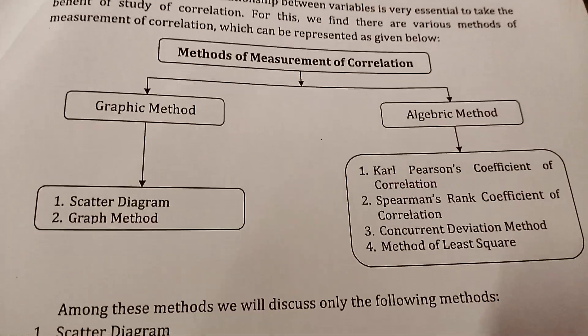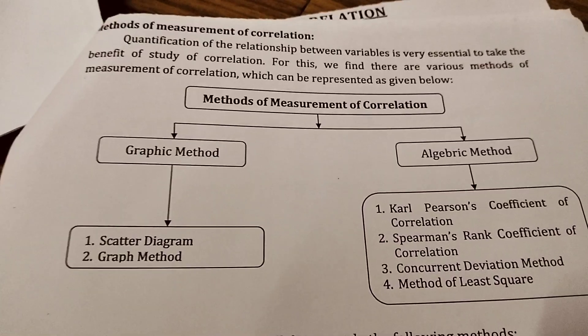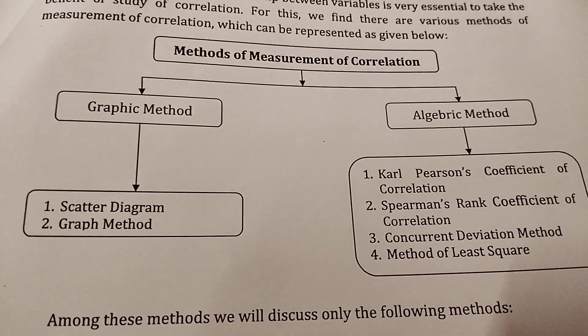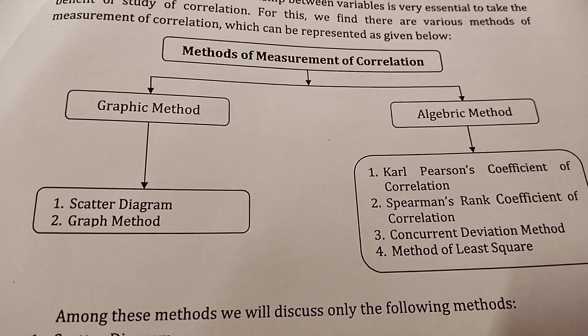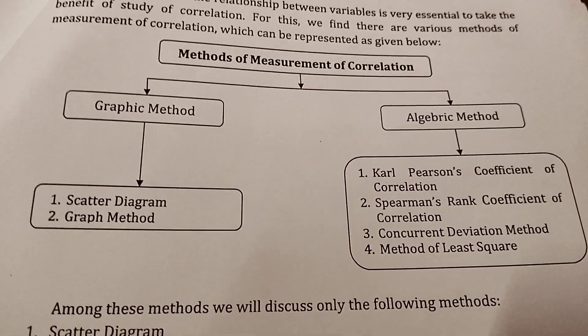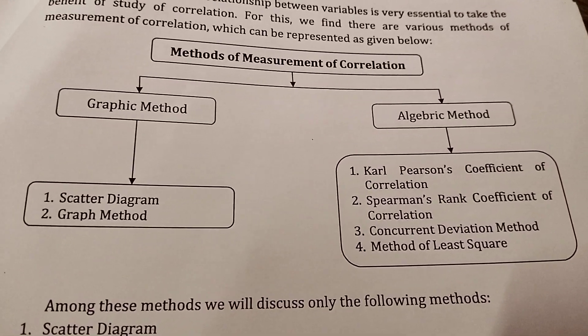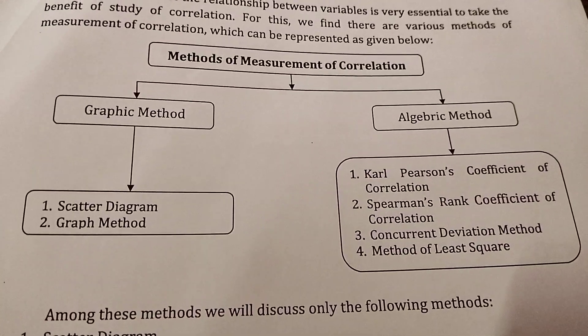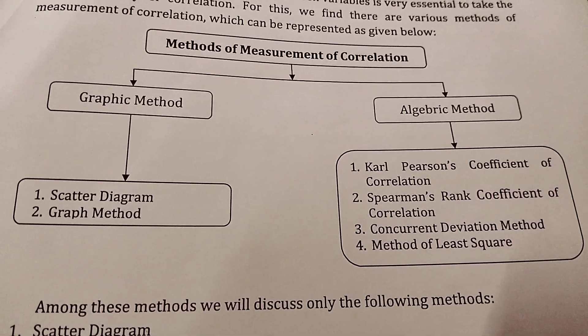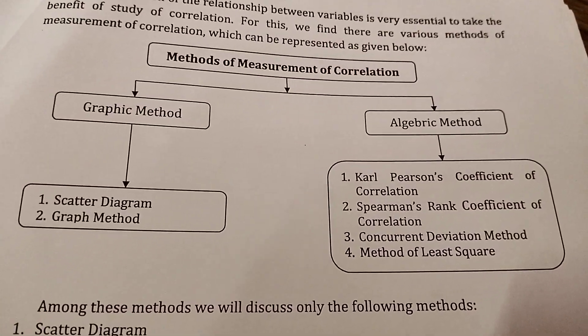In correlation, we have two methods for measurement of correlation: the graphic method and the algebraic method. In the graphic method, we already covered scatter diagrams where you show the given values in the diagram. But in the algebraic method, we have different approaches.